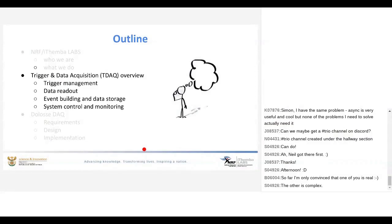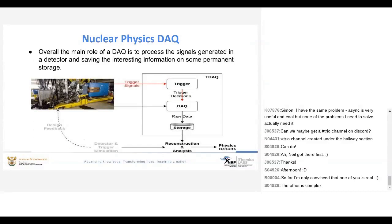Now that you have seen the equipment, here is a brief introduction to triggering and data acquisition in the nuclear physics space. The main purpose of a DAQ, or data acquisition system, is to process the signals generated in your detector and save whatever information is of interest onto some permanent storage for offline analysis. You normally have a component called the trigger, whose purpose is to determine if the signals from the detector are interesting and whether the DAQ should start acquiring them, process them, filter them, and send them off to storage.